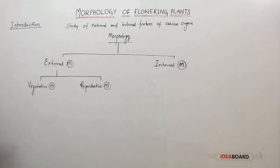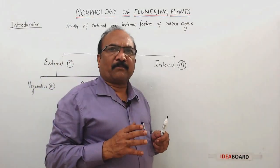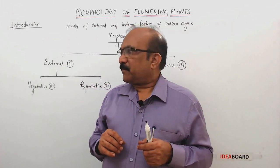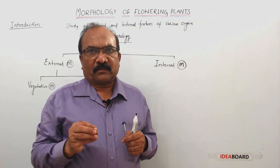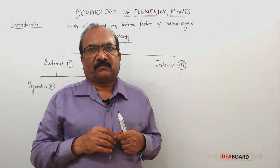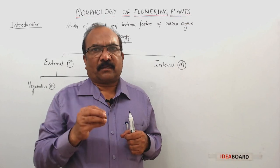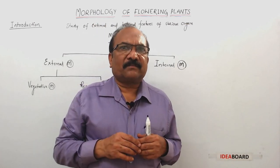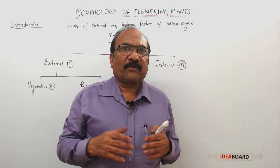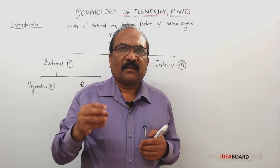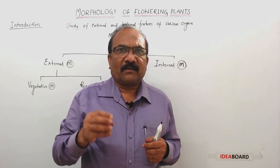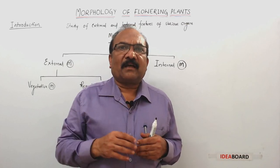Remember, plants have two types of parts. Some are vegetative parts and some are reproductive parts. What are vegetative parts of the plants? Root, stem and leaves are the vegetative parts. Then, what are reproductive parts? Flower, fruit and seed are the reproductive parts.